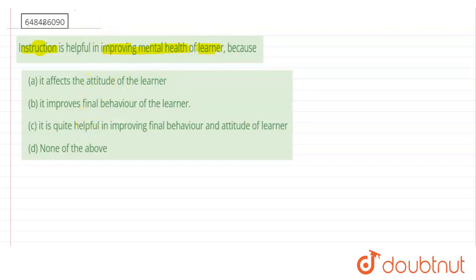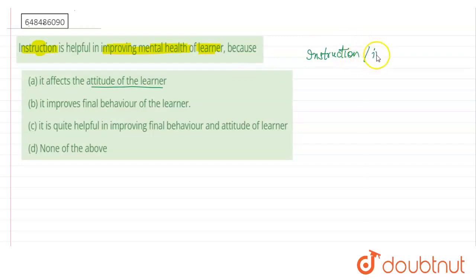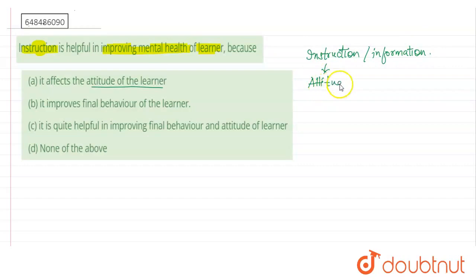The first option is saying that it affects the attitude of the learner. So what does instruction mean? Instruction means that it can be some information — it could be in any form. So what does information mean? It helps to change the attitude of the learner. The learner's attitude is changed. This is right.